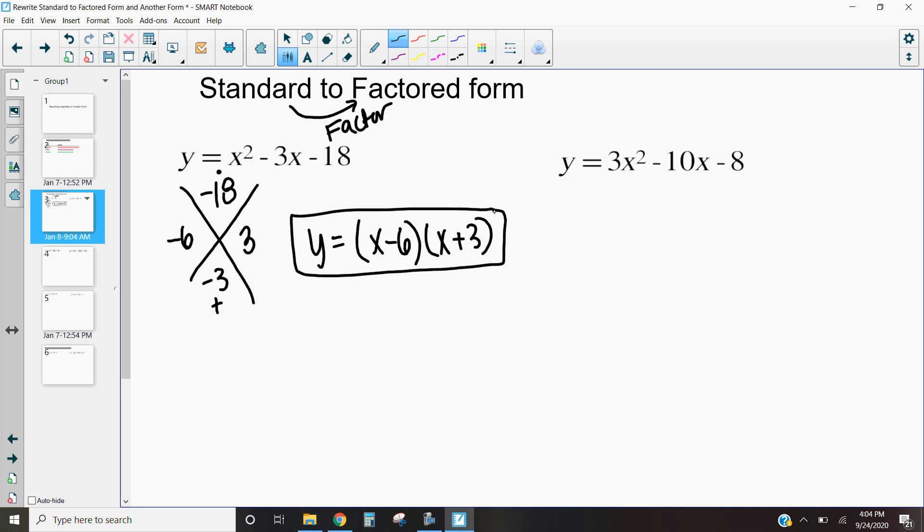So let's take a look at this next one. We're going to do the same sort of thing. So in this case, we can factor it this way. We can say, okay, does 3, negative 10, and negative 8 have a common factor? No.